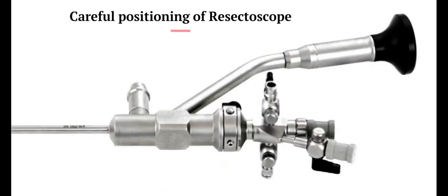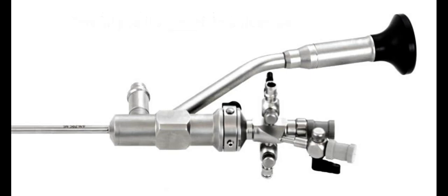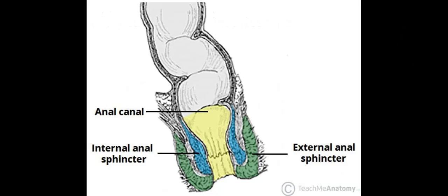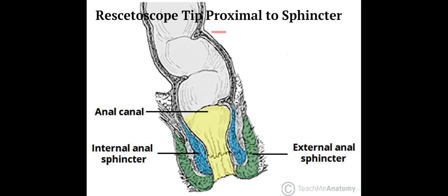Because the area of resection is at the prostatic apex, near both the external urethral sphincter and the rectum, careful and constant positioning of the resectoscope is essential. A finger placed in the rectum can help avoid rectal injuries and assist in keeping the resectoscope tip proximal to the external sphincter.